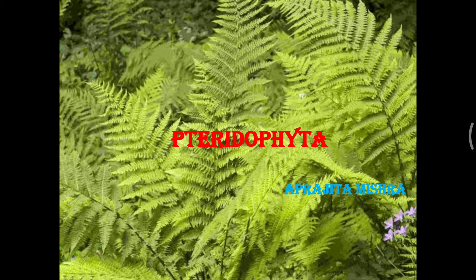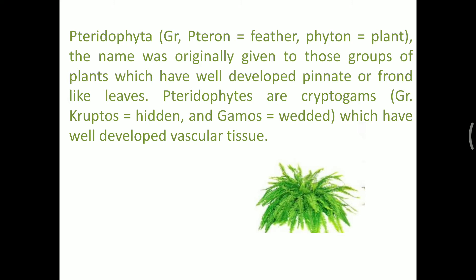Similar to amphibians, mosses and ferns also require water for fertilization. We will now study pteridophyta and some of its characteristics. Pteridophyta are feather-like plants. Frond is a leaf-like entire plant body, and pinnate means having a pointed arrangement. They belong to the cryptogam category, and since they are cryptogams, the gametes are hidden.